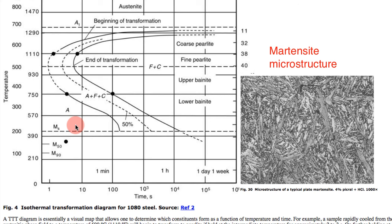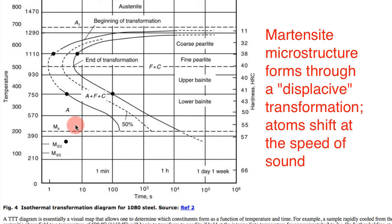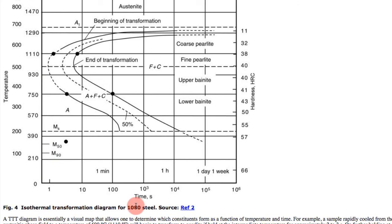It turns out that those transformations are time independent. They're what's called a displacive transformation, meaning they just take place at the speed of sound where the atoms just suddenly shift. So if you were able to cool from, let's say, austenite disc all the way down to this line in under essentially a second for this composition, you could transform that into martensite.